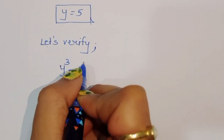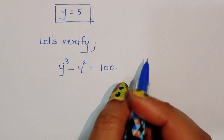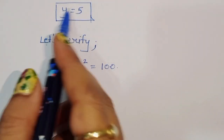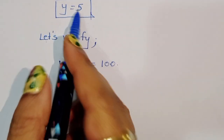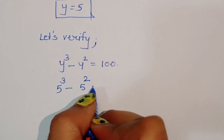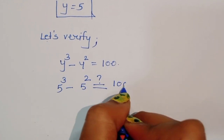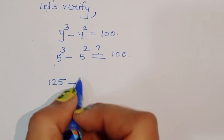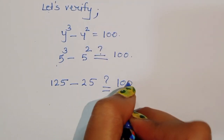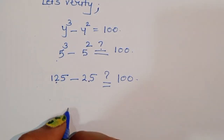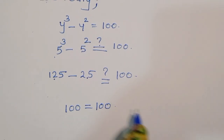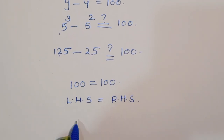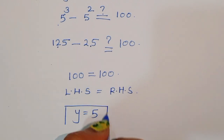The question is y cubed minus y squared equals 100. Substituting y equals 5: 5 cubed minus 5 squared equals 125 minus 25 equals 100. So LHS equals RHS, confirming y equal to 5 is the correct solution.